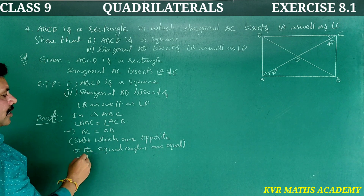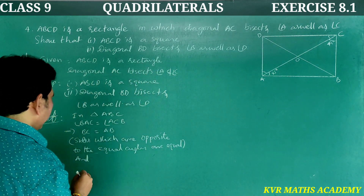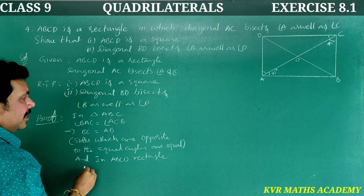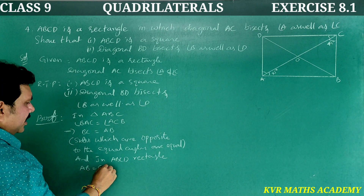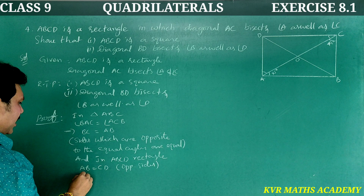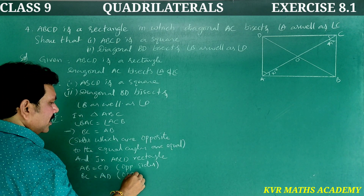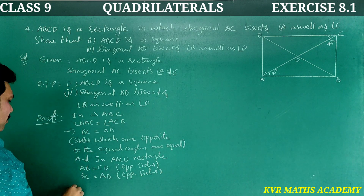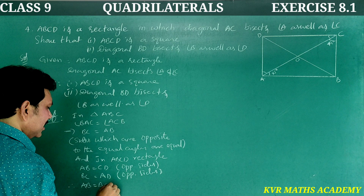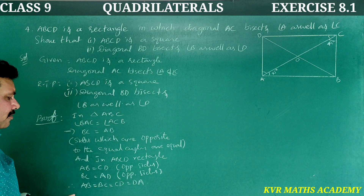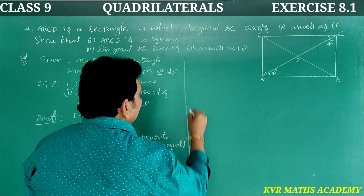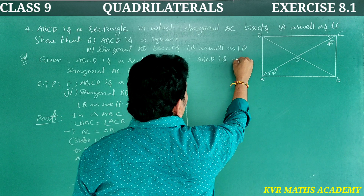In rectangle ABCD, AB is equal to CD and BC is equal to AD — opposite sides. Since BC is equal to AB, all sides are equal: AB = BC = CD = DA. Therefore, ABCD is a square. First part proved.